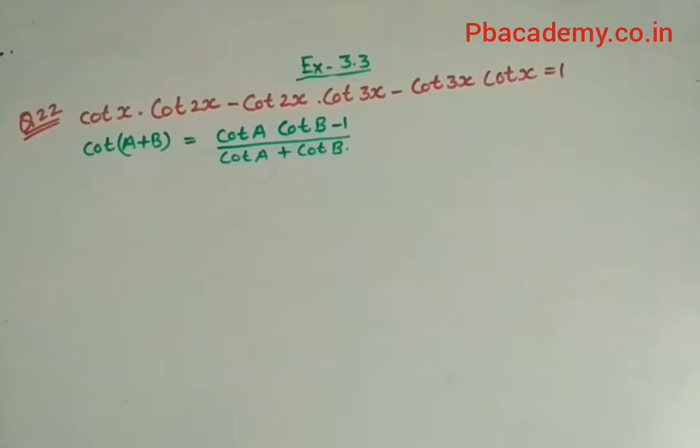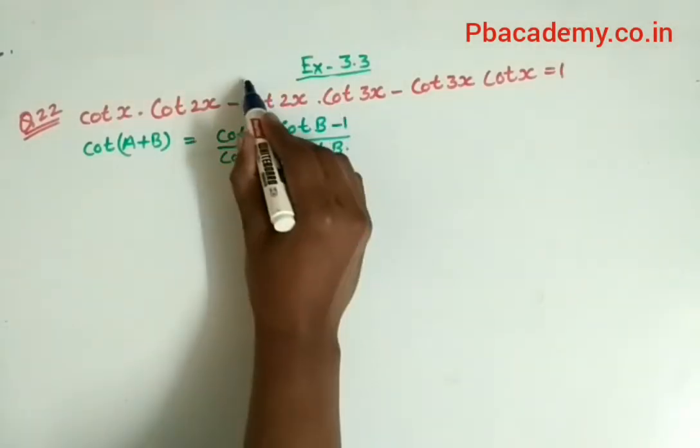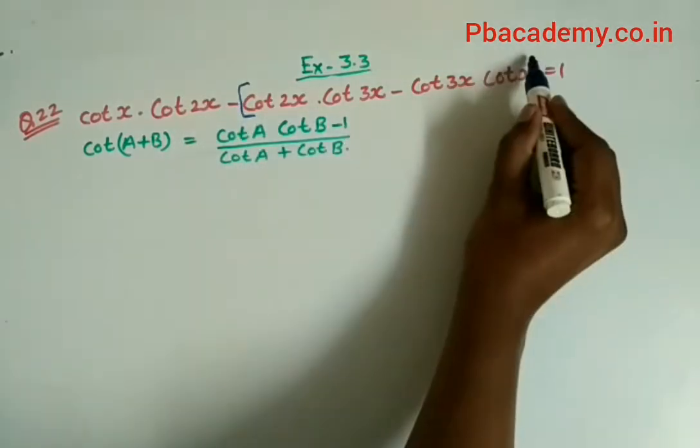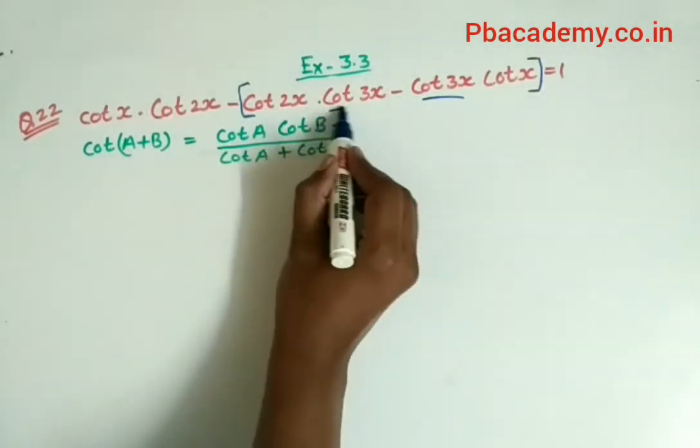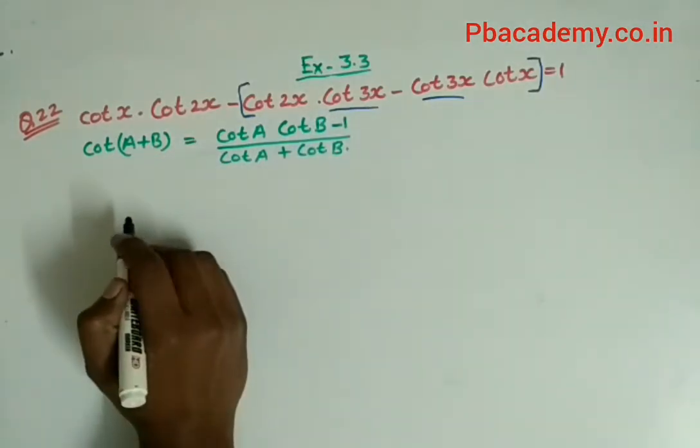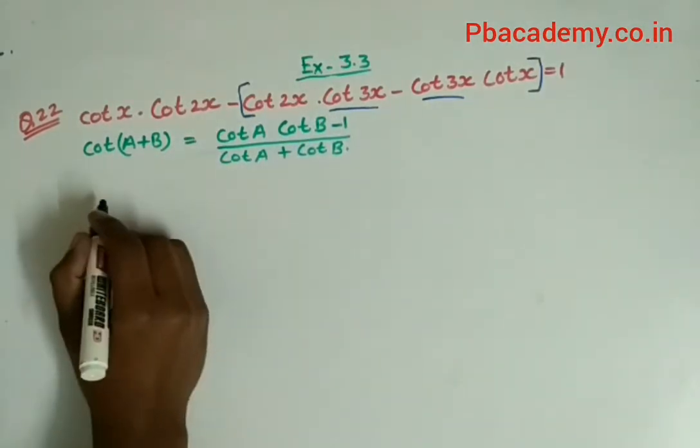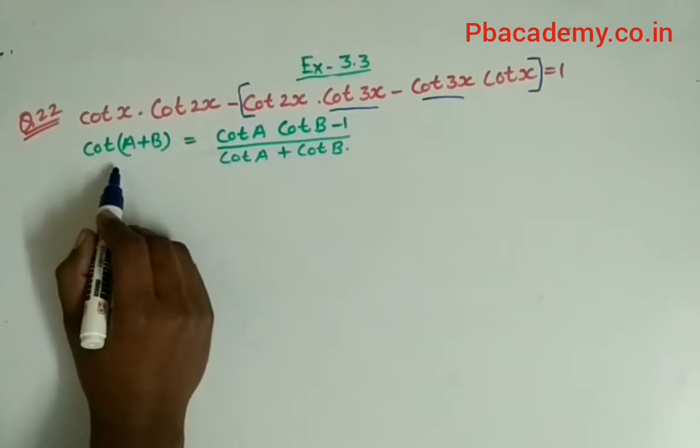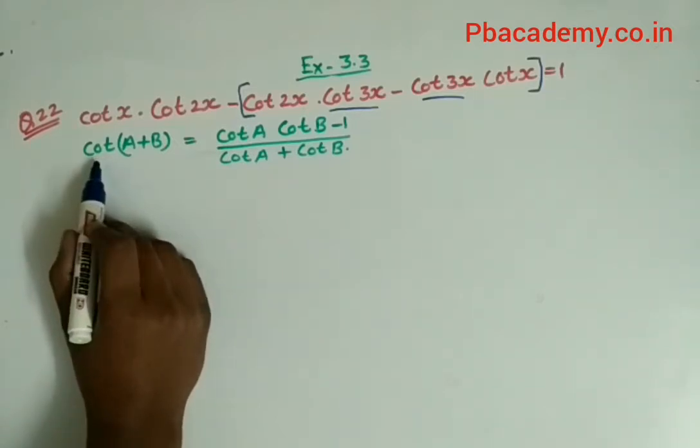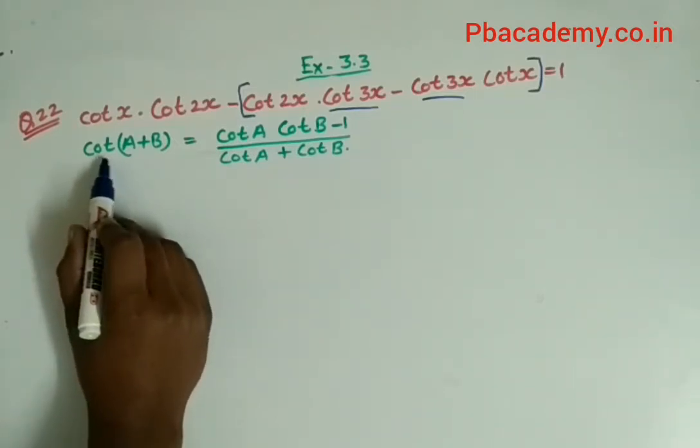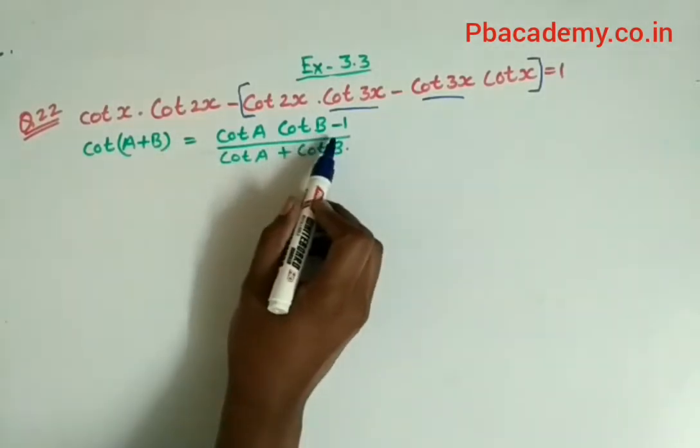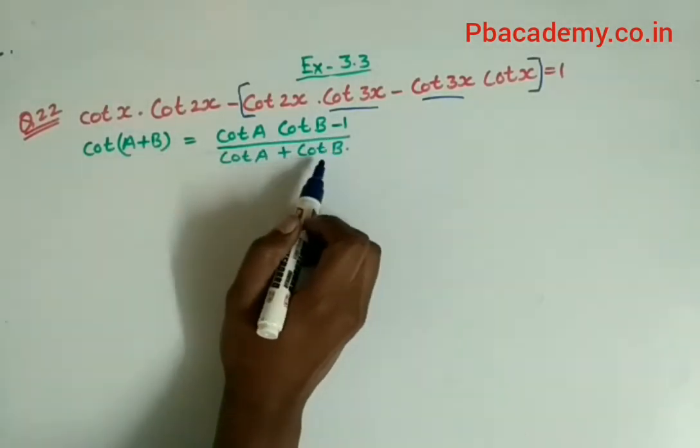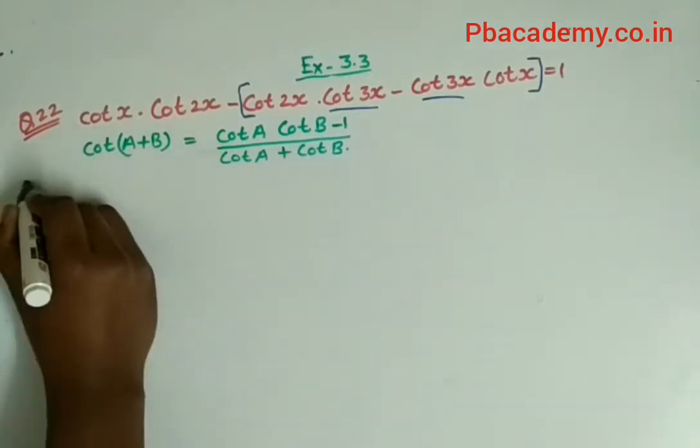We will take cot 3x as common and solve this question further. We will use the identity cot(A + B) = (cot A · cot B - 1) / (cot A + cot B). Now let us try to solve this question.